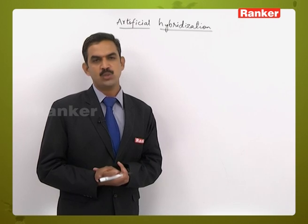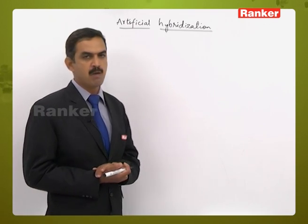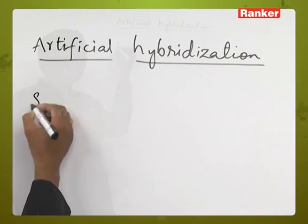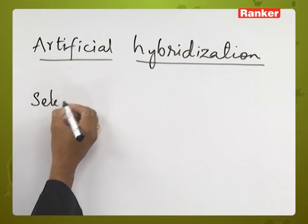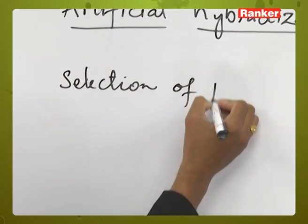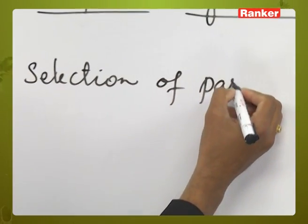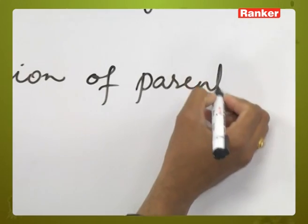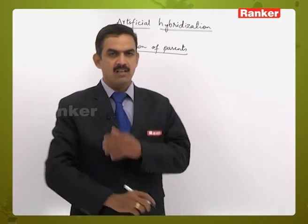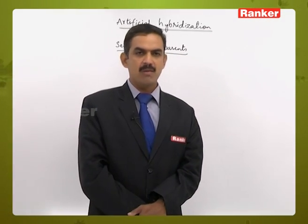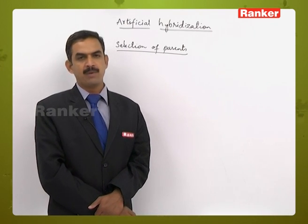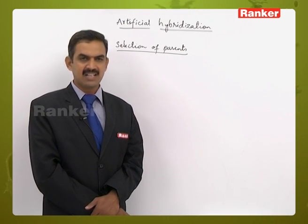The first and foremost step in artificial hybridization is the selection of parents. Generally, the male parent and the female parent are selected, and these parents will contain bisexual flowers.